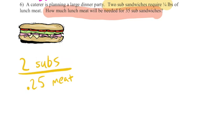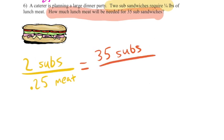So two subs require a quarter of a pound of meat. This is a ratio comparing the number of subs to the amount of meat necessary. Now we're going to set up another ratio that should be similar. This ratio says that we need 35 subs since subs is on top. On the first ratio, we'll put it on top for the second. And then we don't know the amount of meat, so we'll just put X meat.